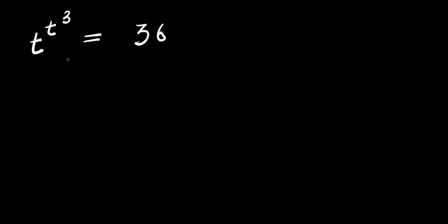Hello, how to solve this exponential problem? We have t to the power of t to the power of 3, and this equals 36. We are solving for the value of t that will satisfy this equation — that means the value of t that will make the left hand side of the equation equal the right hand side.